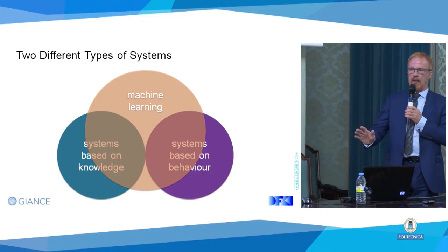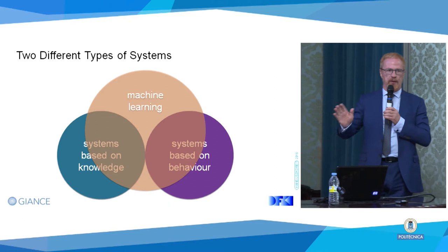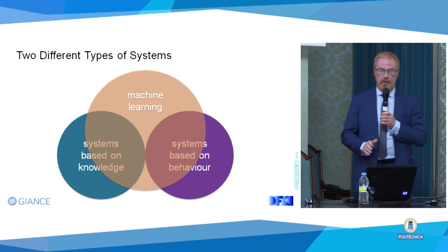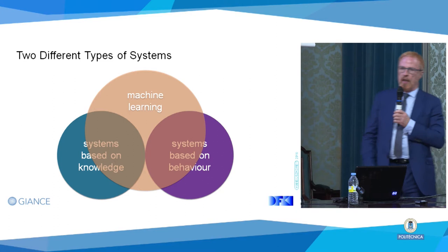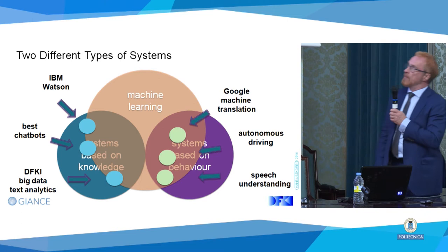So there are these two different types of systems, and then machine learning came into the game and changed everything. Before machine learning, everything was put in by people. Now machine learning comes and we learn. You can learn both — you can learn knowledge and you can learn behavior. And more successful right now is the learning of behavior.